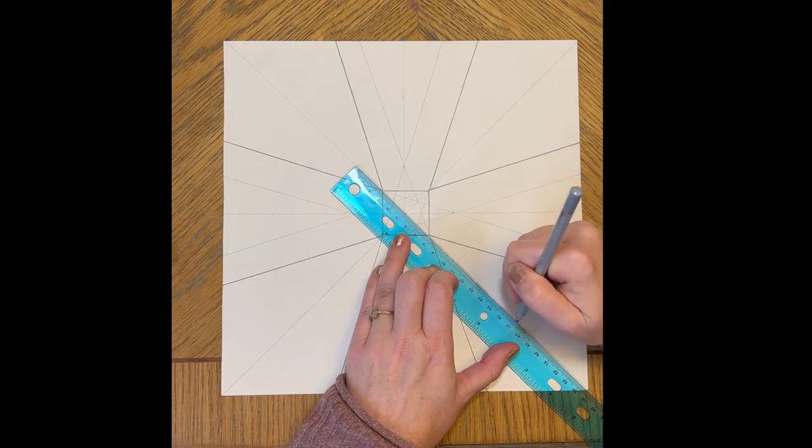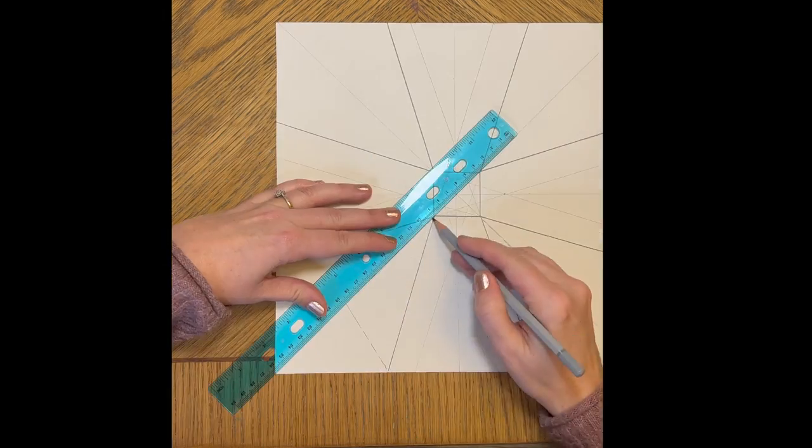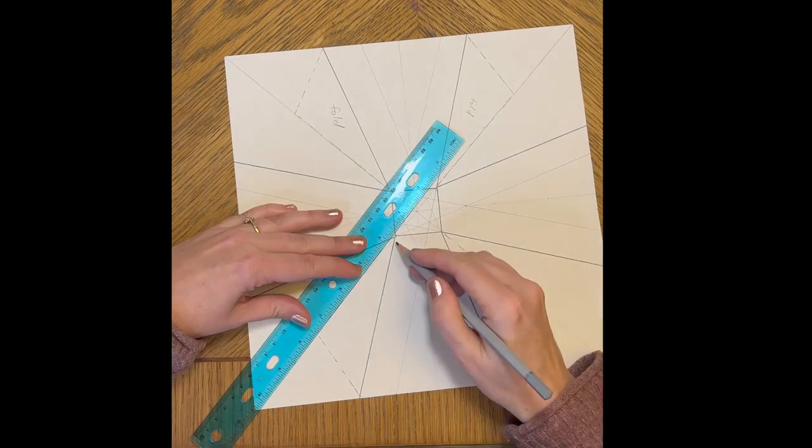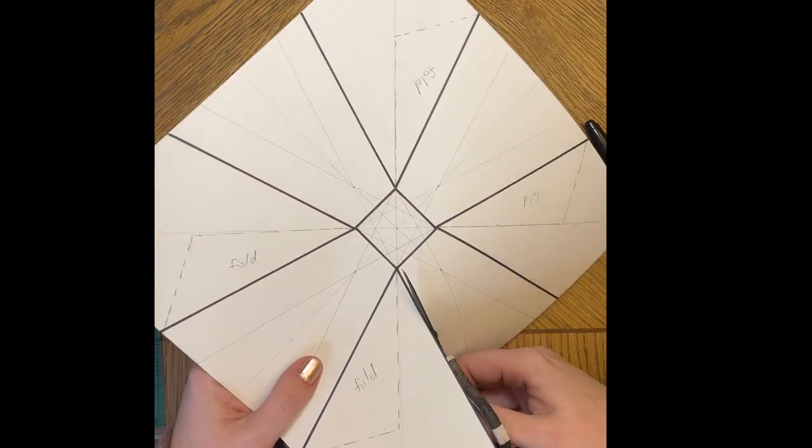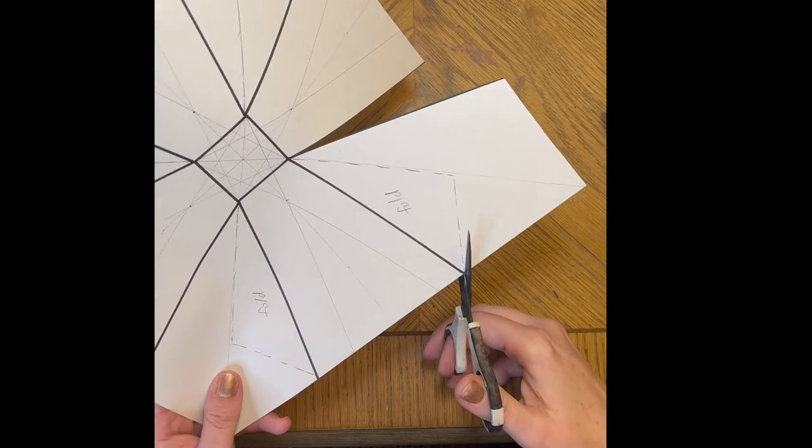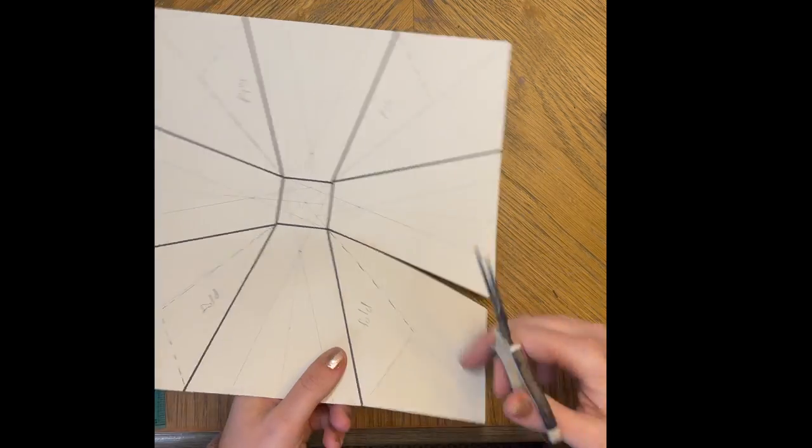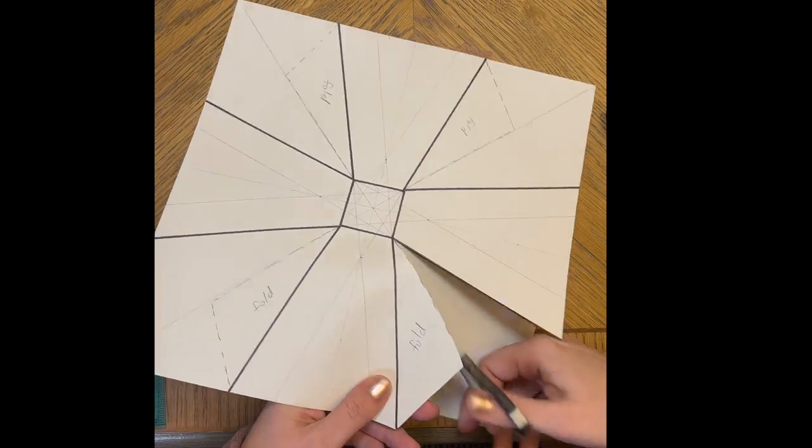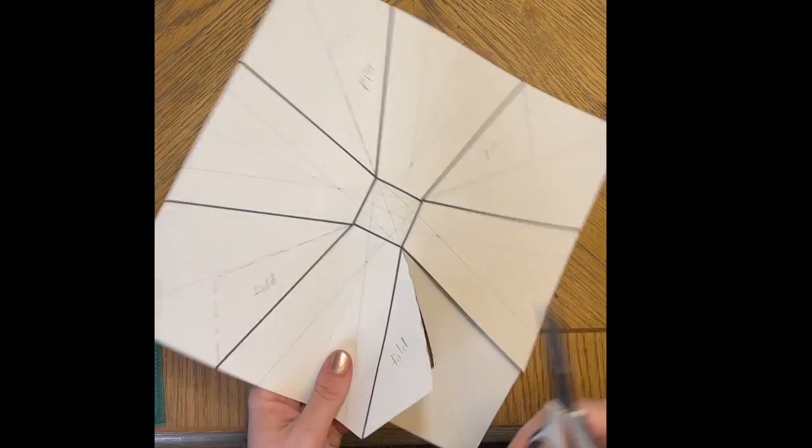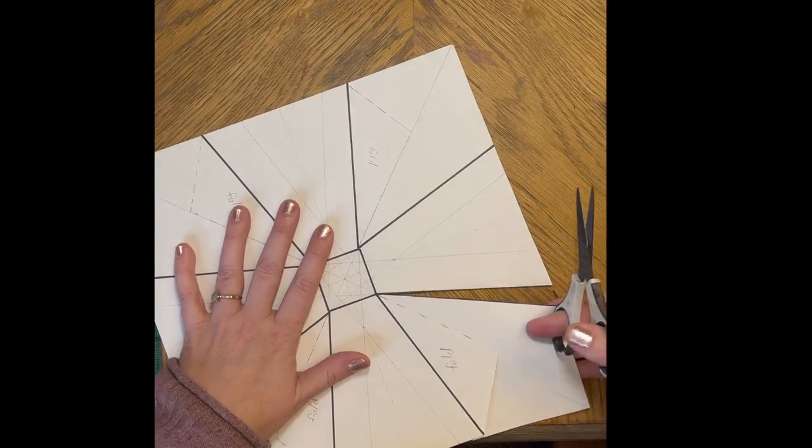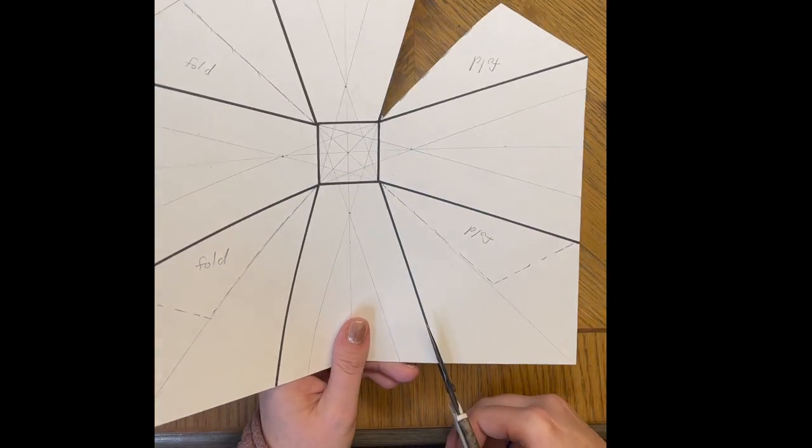Here I'm making four triangles that will eventually be folded back and help us glue this together in the end. And now we will cut out these specific areas. Go around that folded triangle and the section next to it. You will do that on all four corners.